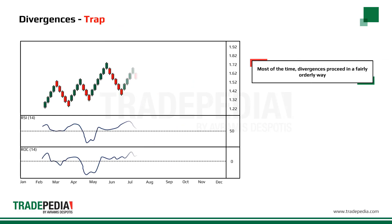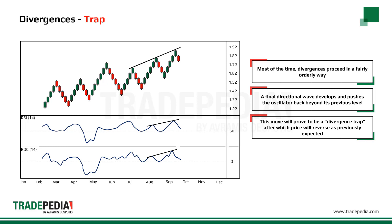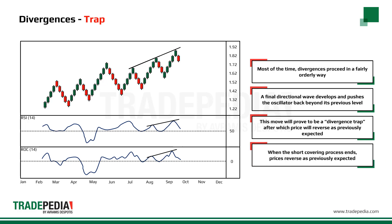Most of the time, divergences proceed in a fairly orderly way — they get progressively lower or higher as per the direction of the trend. Then, just as you expect the price to drop, a final rally develops and this advance will push the momentum indicator back above at least one or two previous peaks. Typically, this latest rally will prove to be a divergence trap, after which the price will fall in the manner previously expected. This final move is usually because of some unexpected news event that causes short covering. When the short covering ends, there is very little to support the price and down it goes.